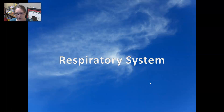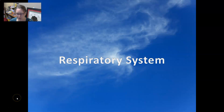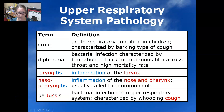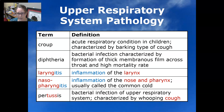Hi, this is Dr. A. In this medical terminology video, we're going to go over the pathologies related to your respiratory system. We'll start with the upper respiratory system, from the larynx up. Croup is an acute respiratory condition in children characterized by a barking type of cough.